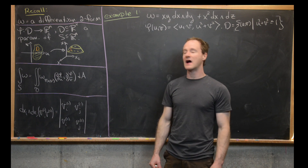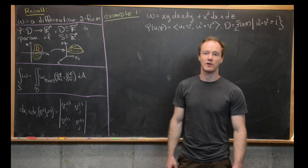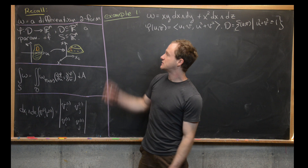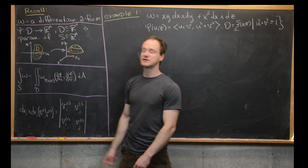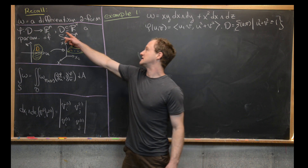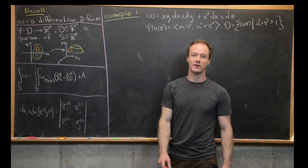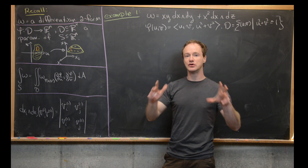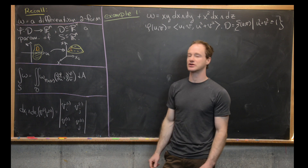In the previous video, we derived the notion of an integral of a two-form. Now we want to do a couple of examples. So let's look at the ingredients for our setup. We have omega, which is a differential two-form. Then we have a smooth function phi from D into R^n, where D is a subset of R^2. We think of that as a parameterization of a two-surface — a two-dimensional surface inside of R^n, which is an n-dimensional space.